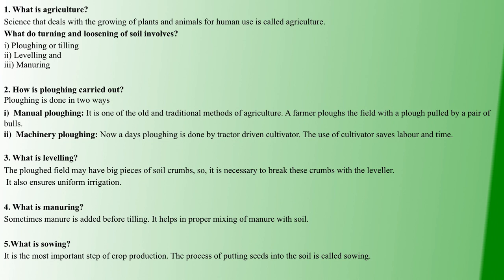Fifth question: What is Sowing? Sowing is crop production. Seeds are spread into the soil. This is sowing — the process by which seeds go into the soil for plant growth.